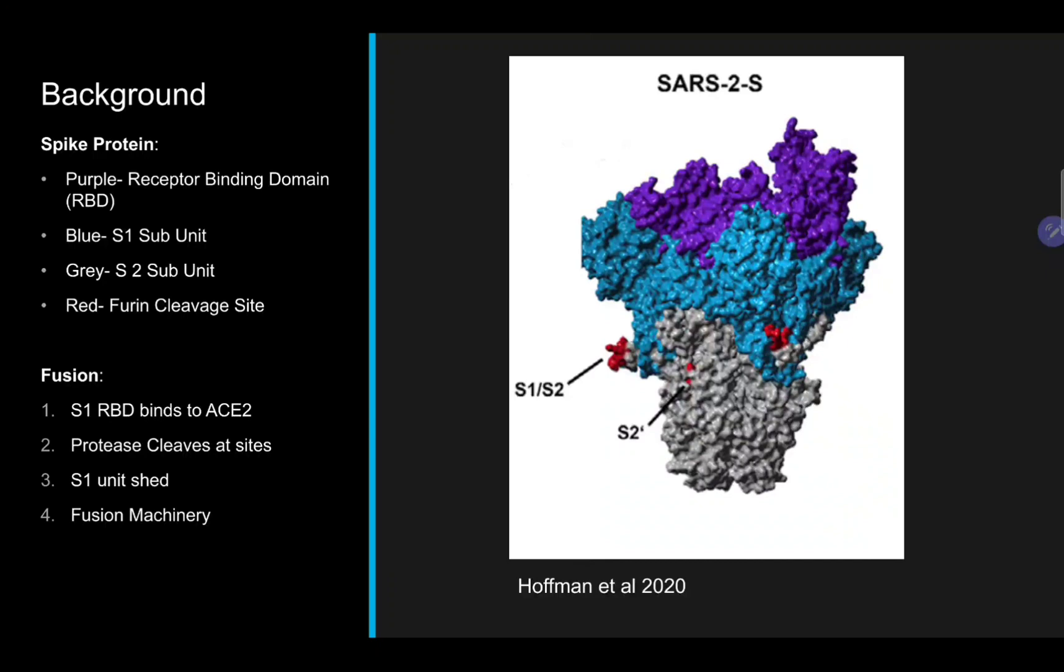The S1 unit of the spike protein is responsible for binding to ACE2, however, once this is complete, it needs to allow room for the fusion machinery in the S2 subunit. This is accomplished by a protease cleaving at the two sites. Once this is done, the S1 subunit is able to shed and make room for the fusion machinery.